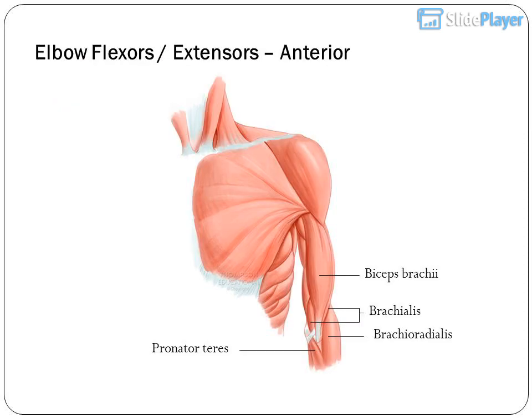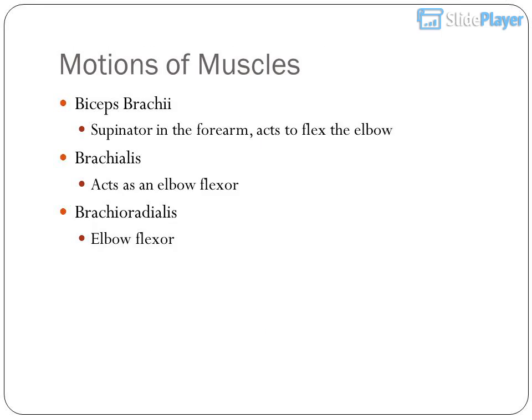Elbow flexors and extensors — anterior: biceps brachii, brachialis, brachioradialis, pronator teres. Motions of muscles: biceps brachii acts as a supinator in the forearm and acts to flex the elbow. Brachialis acts as an elbow flexor. Brachioradialis is also an elbow flexor.